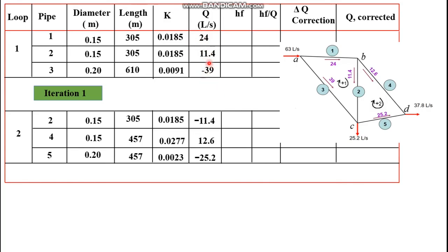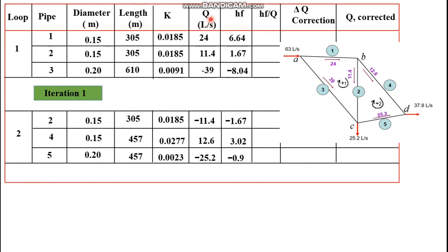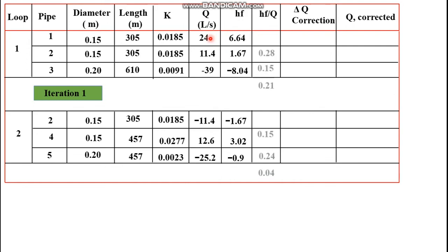Next, calculate the head loss due to friction. Head loss is given by K times Q raised to the power 1.85. We calculate the head loss for each pipe, then find the ratio of head loss to discharge by dividing the head loss column by the discharge column. The summation of head loss for loop 1 is 0.27 and the summation of hf/Q is 0.63.